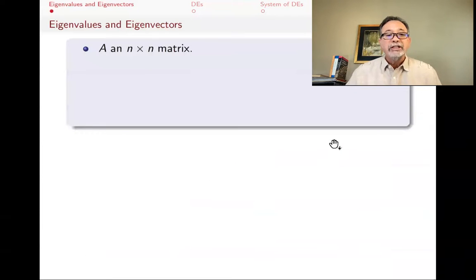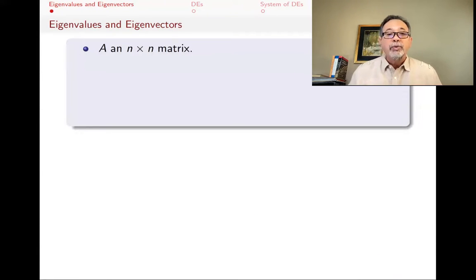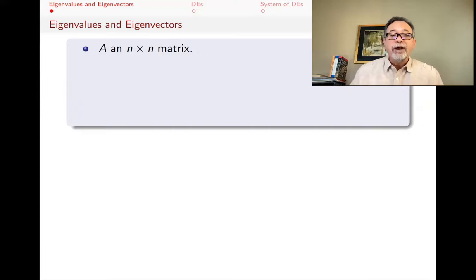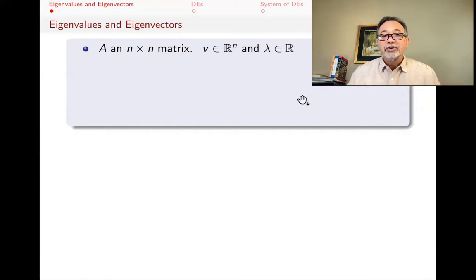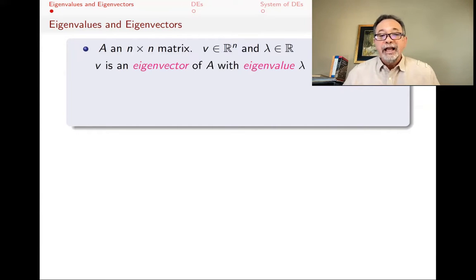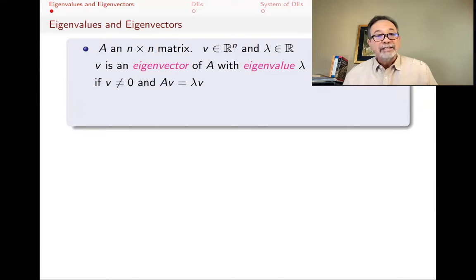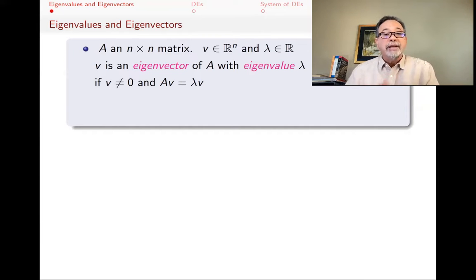To get started, let me remind you quickly about eigenvalues and eigenvectors, although if you don't know that, you should watch the videos on that. This talk is going to be useless without knowing what eigenvalues and eigenvectors already are. So if you have an n-by-n matrix, and a vector V in Rn — an n-tuple and a scalar lambda — then V is an eigenvector of A with eigenvalue lambda, if V is not zero (zero is never an eigenvector), and A times V equals lambda times V, a scalar multiple of V.